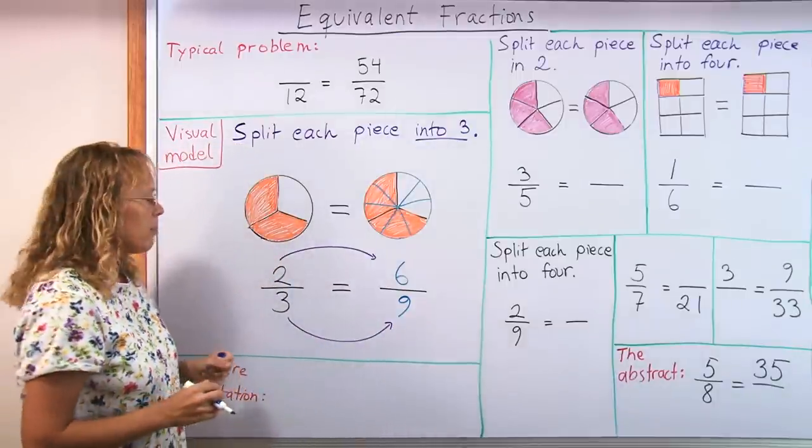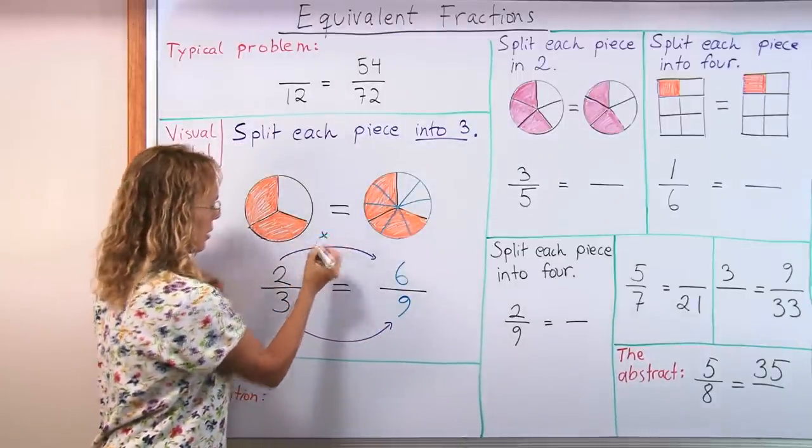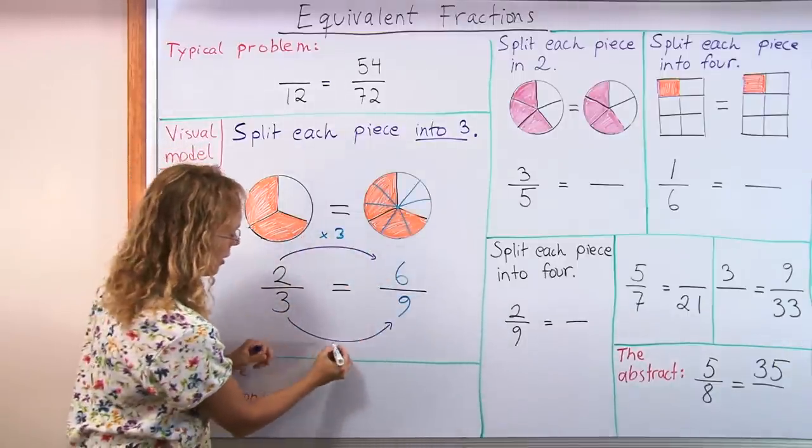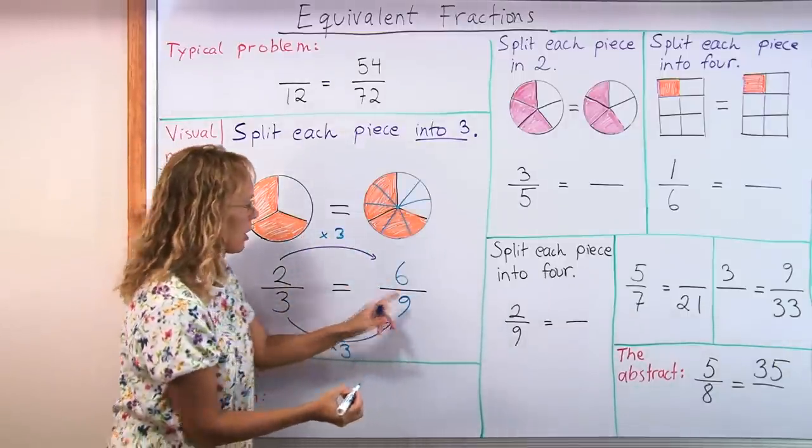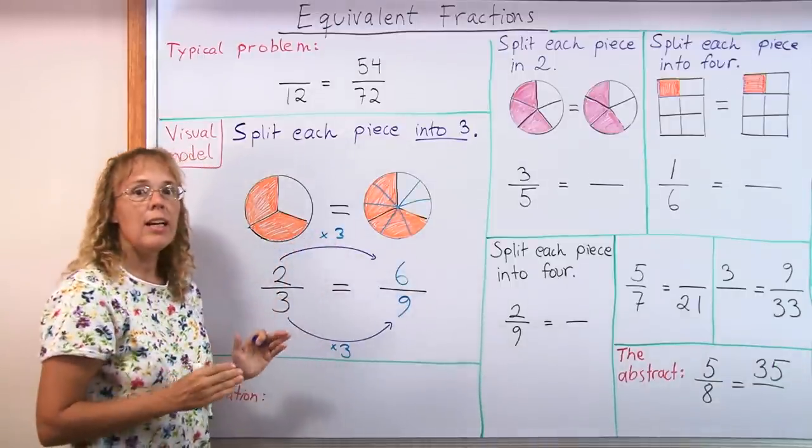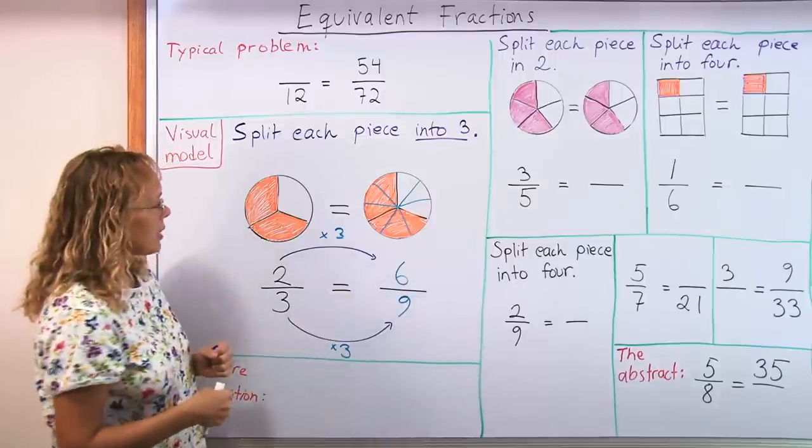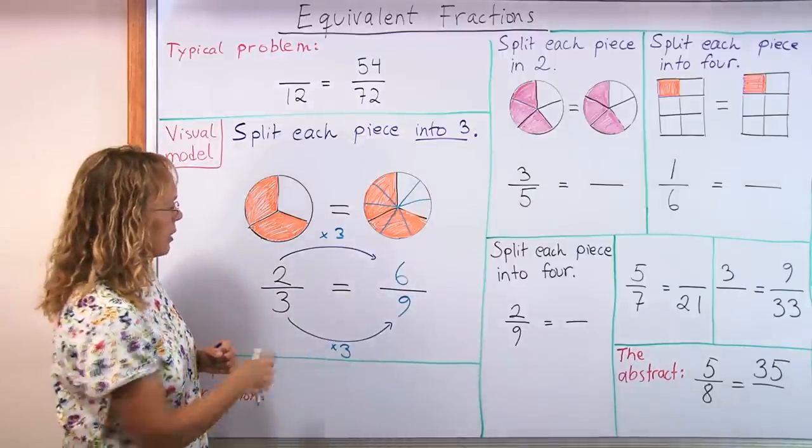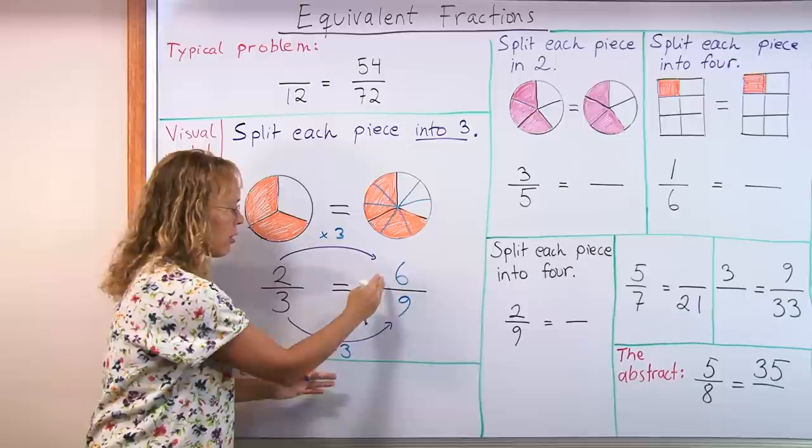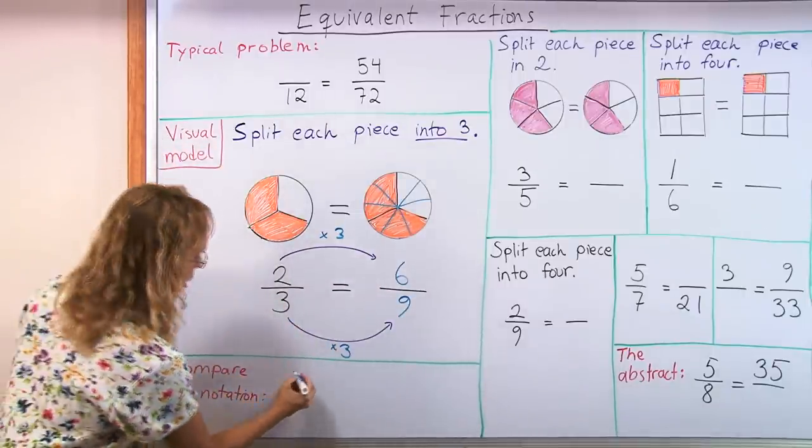And then I have drawn arrows here. And now I'm going to write here, 2 times 3 is 6 and then 3 times 3 equals 9. These little times threes are indicating how many pieces we split into the existing pieces. And I like this kind of notation better, with these arrows, than the standard notation you often see, which goes like this.